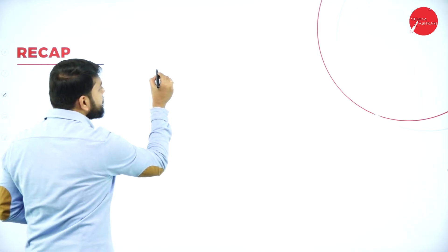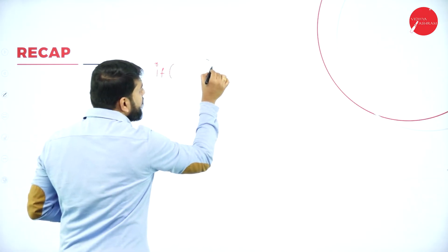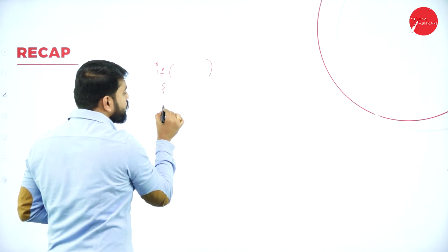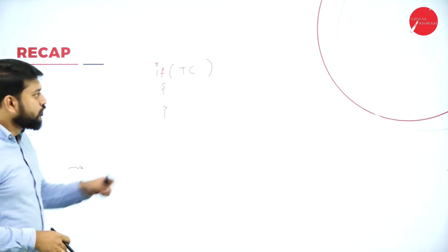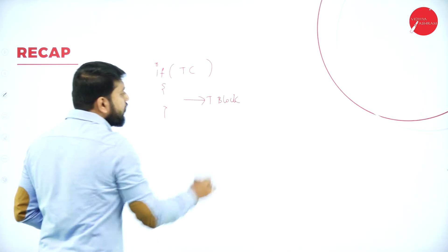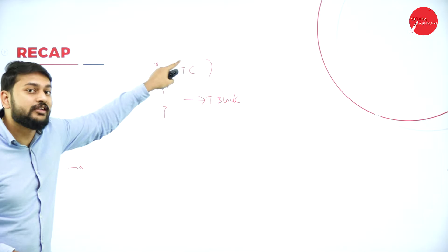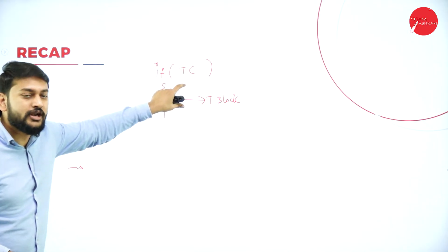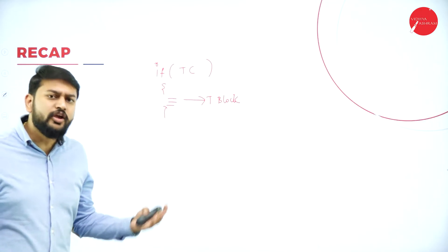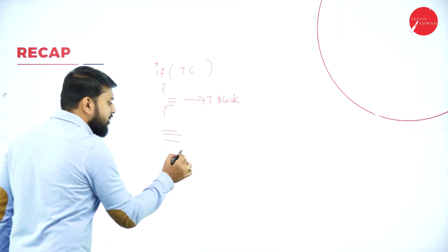What have I done till now? I started with a simple if statement. The syntax: first I write the if keyword, then I write the test condition — let's call it TC — and inside the curly braces is what I call the true block. I can use simple if when I have only one condition to be tested. If that condition is true, I execute the statements in the true block. Suppose the condition is false — I say nothing; I start executing the rest of the statements.